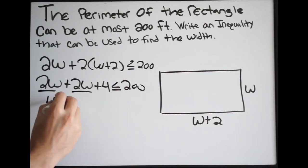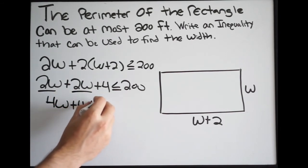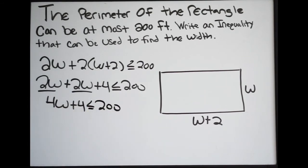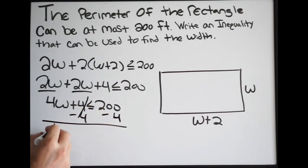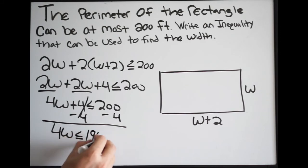Let's minus four on both sides, so we get four w is less than or equal to 196. Our last step, divide both sides by four.